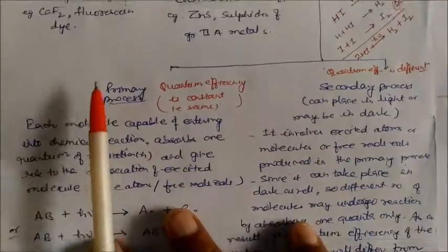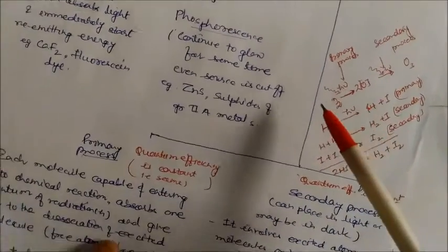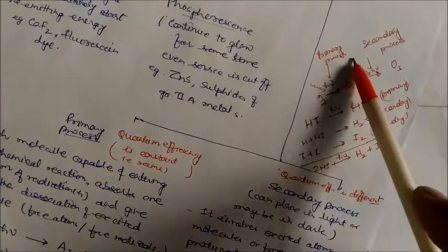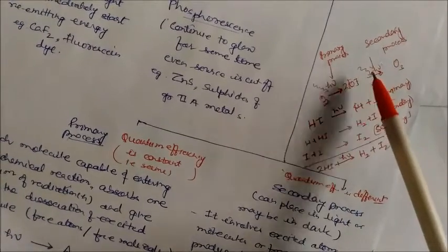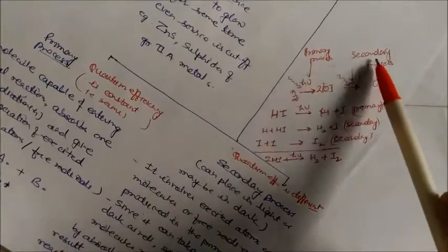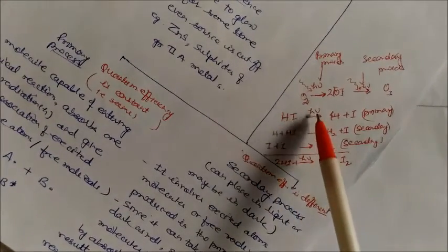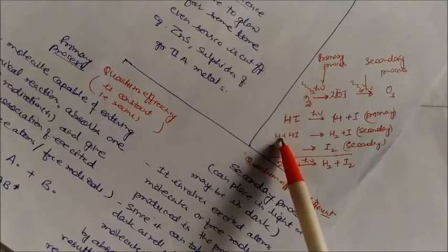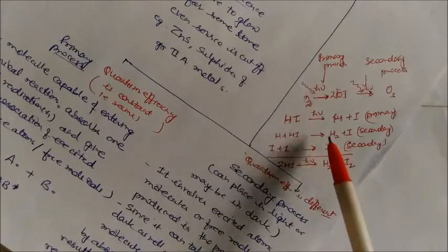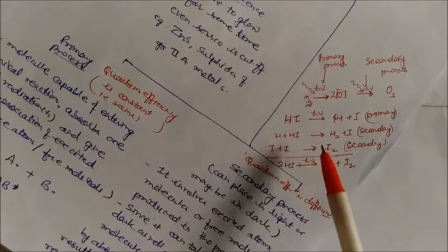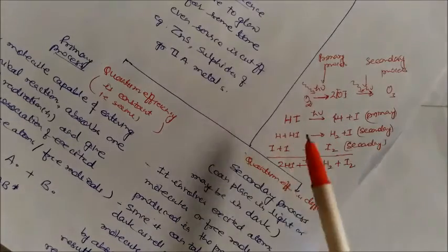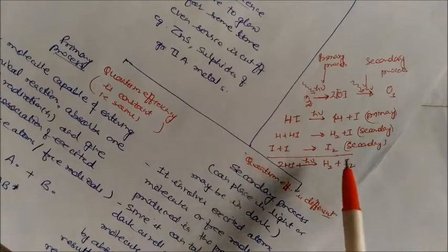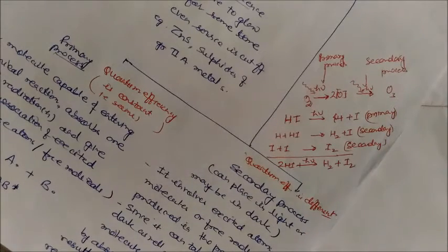Example of primary and secondary processes: O2 under sunlight gives free oxygen atoms (primary process); these free atoms react with O2 to form ozone (secondary process). For HI: HI on absorption of light gives H and I atoms (primary process); these free atoms react with another HI molecule to give H2 and I2, and I plus I gives I2 — these are secondary processes. Overall: HI in sunlight gives H2 plus I2.